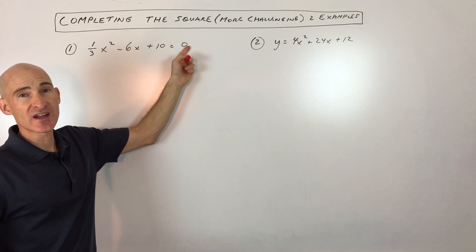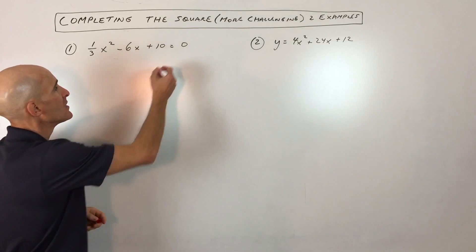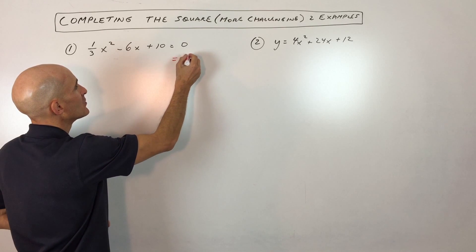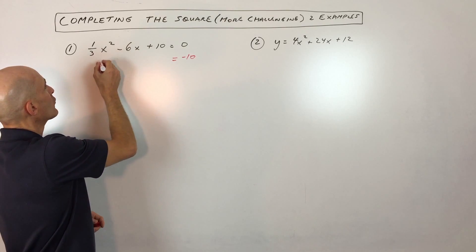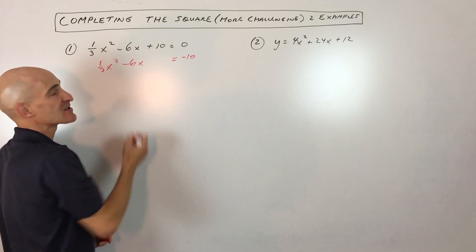The first thing you want to do is move the constant to the other side of the equation just to get it out of the way. So let's go ahead and do that. We have equals negative 10, and then over here we're left with one-third x squared minus 6x.